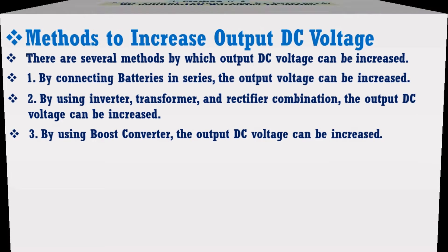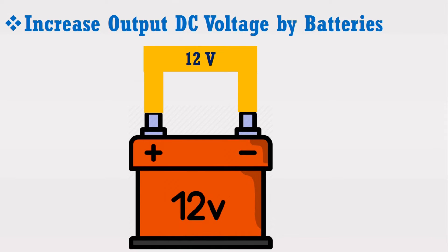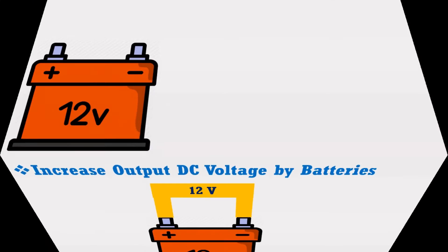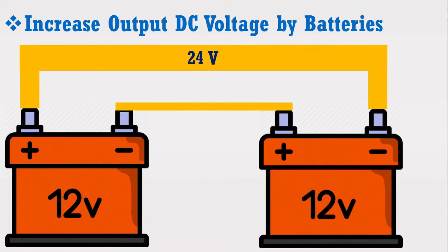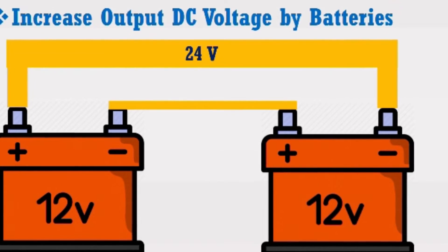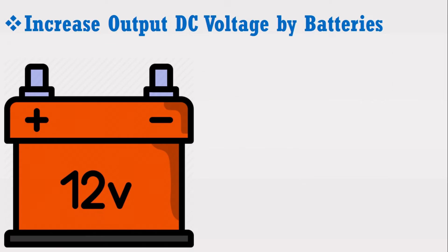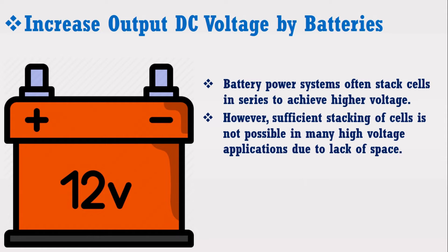Let's discuss the first method. Suppose we have a battery having a voltage of 12V and we want to increase it up to 24V. Then two batteries of 12V can be connected in series to get the 24V output DC voltage. Battery power systems often stack cells in series to achieve higher voltages. However, sufficient stacking of cells is not possible in many high-voltage applications due to the lack of space.